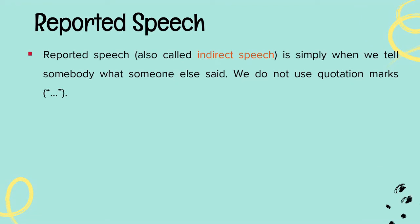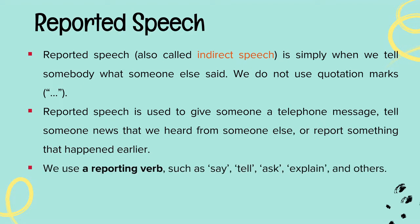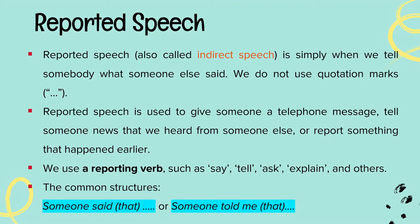Next, reported speech can also be called indirect speech — that is when we tell somebody what someone else said. We do not use quotation marks. Reported speech is used to give someone a telephone message, tell someone news heard from someone else, or report something that happened earlier. We use a reporting verb such as say, tell, ask, explain, and others, also in simple past: said, told, asked, explained. The common structures are 'someone said that' or 'someone told me that.'